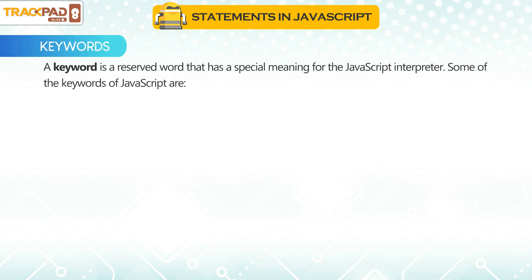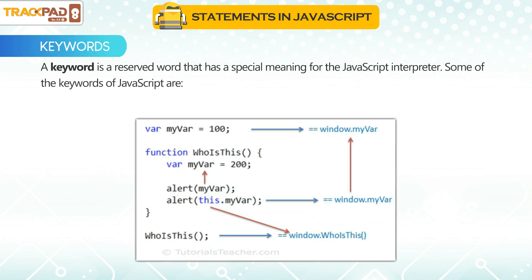A keyword is a reserved word that has a special meaning for the JavaScript interpreter. Some of the keywords of JavaScript are var, switch, let, for, const, function, if, return, etc.